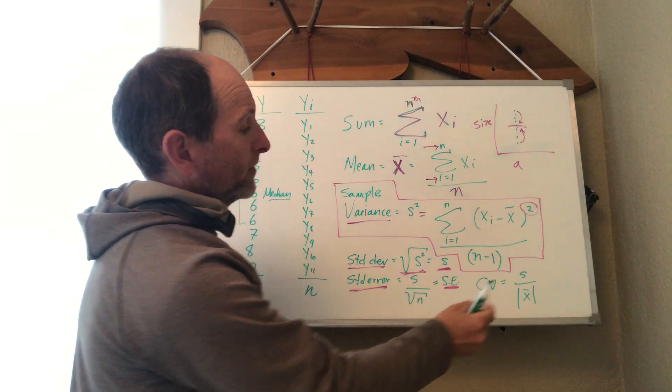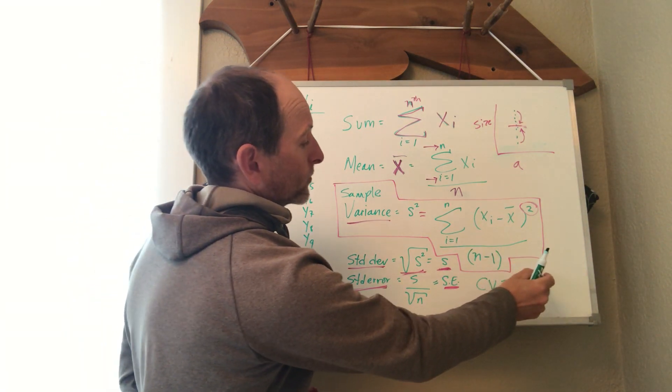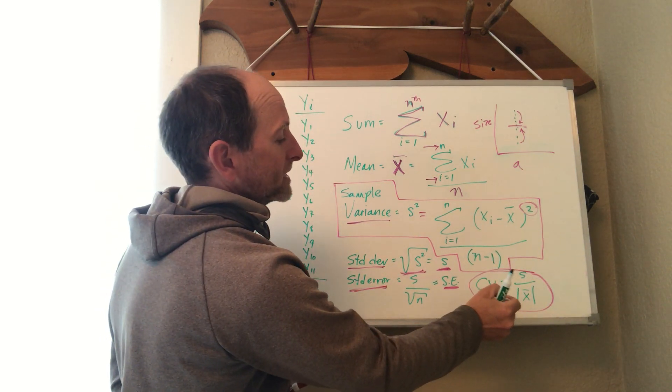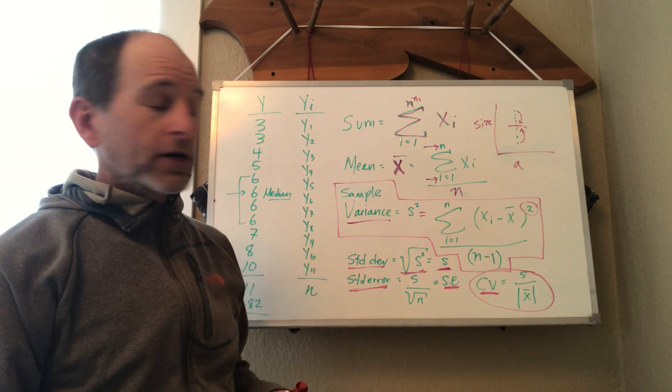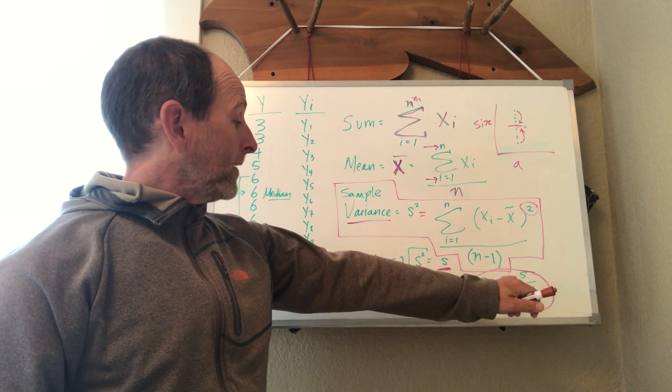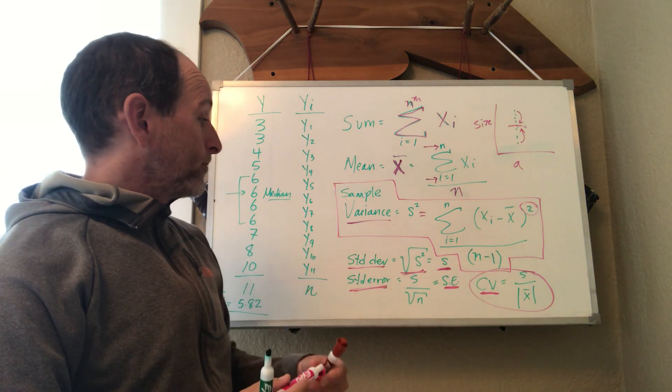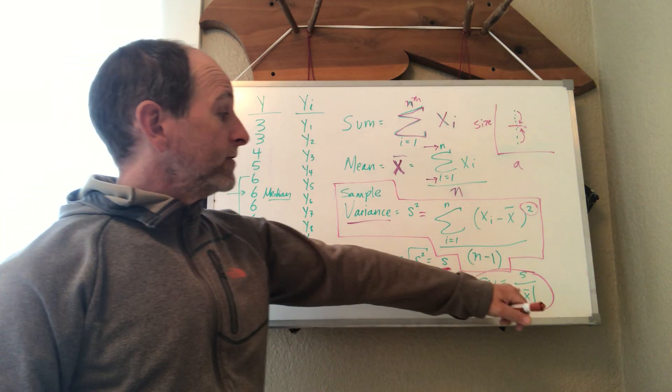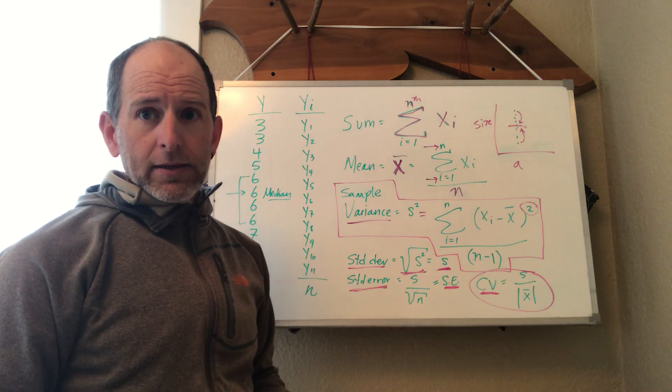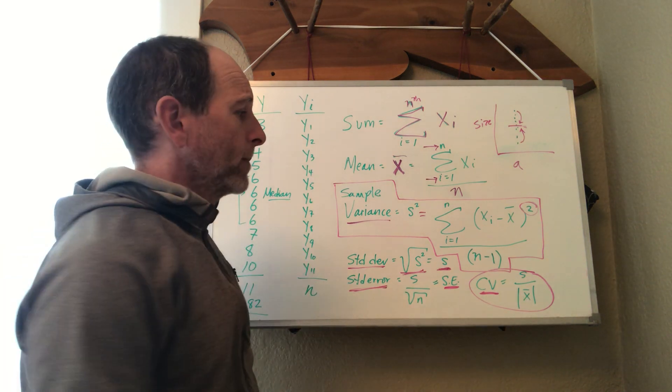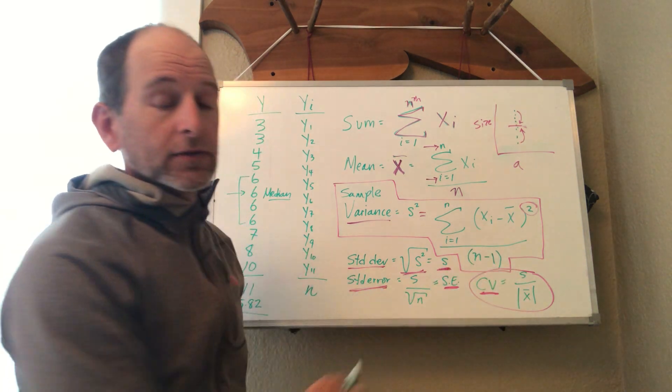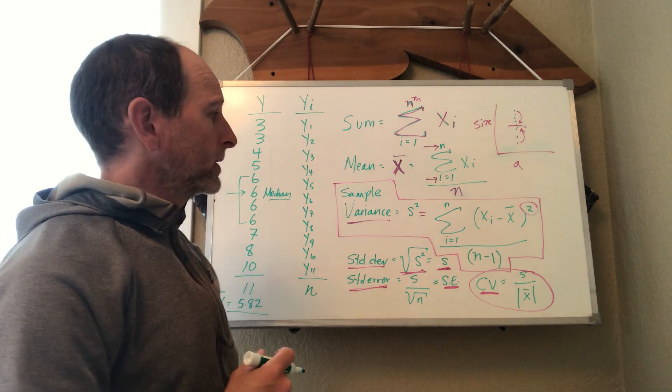Another measurement of error that's very common is referred to as the coefficient of variation or the CV. The coefficient of variation, of course, is just that standard deviation divided by the mean. And so that gives you a measure of the standard deviation relative to the mean for the whole population.